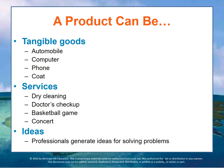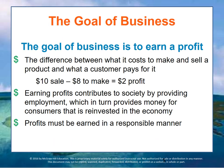Most people associate the word product with a tangible good — an automobile, computer, a phone, coat, or some other tangible items. However, a product can also be a service. This occurs when people or machines or equipment of some kind provide something of value to customers. Examples of service might be dry cleaning, having a physical with your doctor, the performance of a basketball team, or a musical concert.